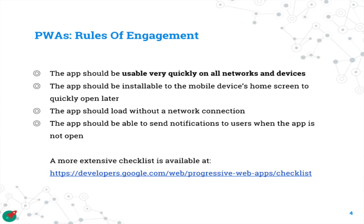One really important requirement is that the app needs to be usable very quickly across all networks and all devices. If I'm trying to open my app on my phone, TV, or watch, it should work properly. This is about creating an app experience that is cross-device and cross-network — whether you're on Wi-Fi, 3G, or even edge — getting that consistent experience across all conditions.